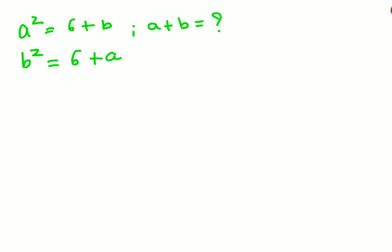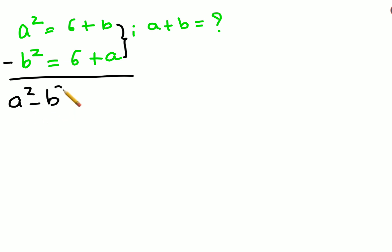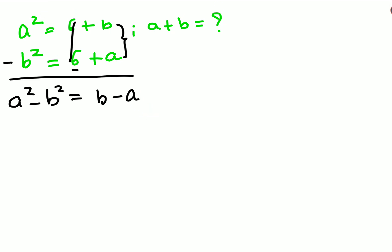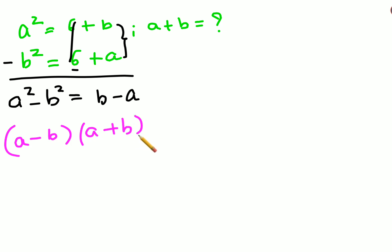In this situation, what we will do is subtract both of the given equations. What we are left with is a² minus b² equals 6 minus 6, which is 0, plus b minus a. Now if you look at the LHS, we can expand this as a minus b, times a plus b, equals b minus a.